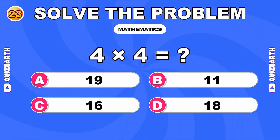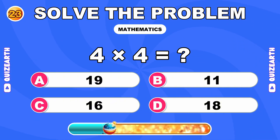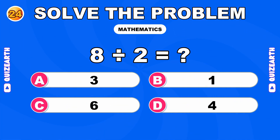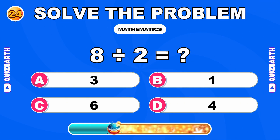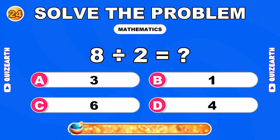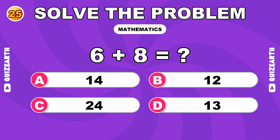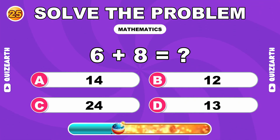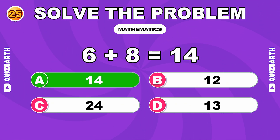How much is 4 times 4? Pure excellence. The answer is 16. What do you get when you divide 8 by 2? Razor sharp. The answer is 4. What is 6 plus 8? Incredible pace. The answer is 14.